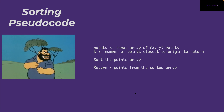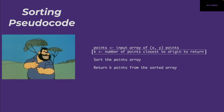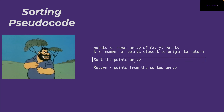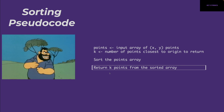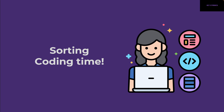If we need the top two coordinates, we extract the first two from the sorted result. Here's the pseudocode: given the points array and integer K, sort the points array by Euclidean distance and return the first K points from the sorted array. It's as simple as that.